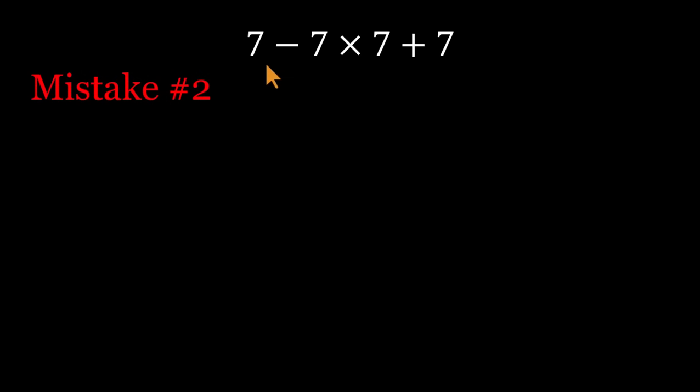Second mistake. Others go straight from left to right. They do 7 minus 7 equals 0, then 0 times 7 equals 0, and finally 0 plus 7 equals 7. It looks logical, but math doesn't really work that way.